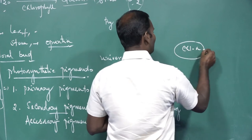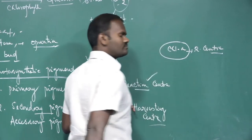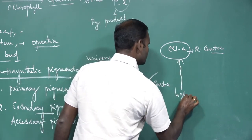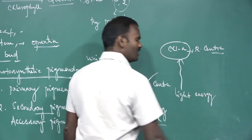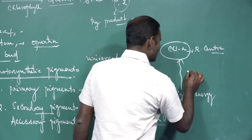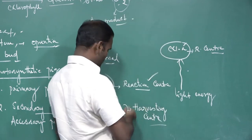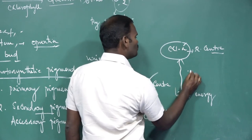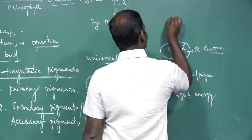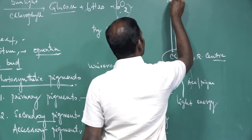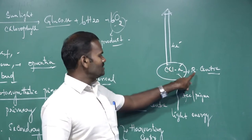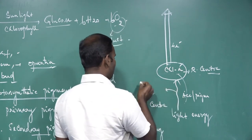Chlorophyll A is the reaction center. What are the main functions of chlorophyll A? They are mainly involved in the absorption of photons of light energy. The light energy is absorbed and captured by chlorophyll A. The function of secondary pigments is to pass the absorbed light energy to chlorophyll A. As a result, the chlorophyll A molecule gets excited or elevated to emit energized electrons — two pairs of electrons are emitted or released.